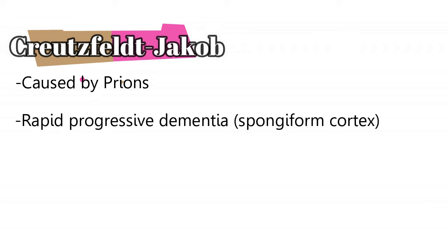Next we have Creutzfeldt-Jakob dementia, which is caused by prions. It's going to cause rapid progressive dementia and something we call spongiform cortex. Basically there are holes inside the cortex, and the brain doesn't have time to fill these holes with cysts or fluid material because of how progressive and rapid the disease is. There will also be myoclonus.